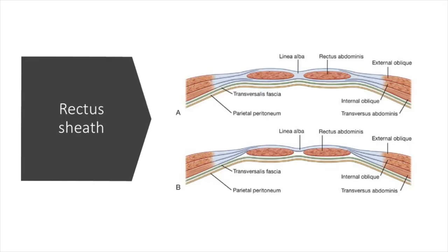This picture shows the rectus sheath from superficial to deep. We have the linea alba, the external oblique as the most superficial muscle, and the transversus abdominis as the deepest. The green line is the transversalis fascia and the yellow line is the parietal peritoneum. The external oblique makes up the anterior sheath, the internal oblique splits into anterior and posterior at the midline, and the transversus abdominis covers the posterior sheath. Everything anterior to this muscle group is the anterior sheath; everything deep is the posterior sheath.